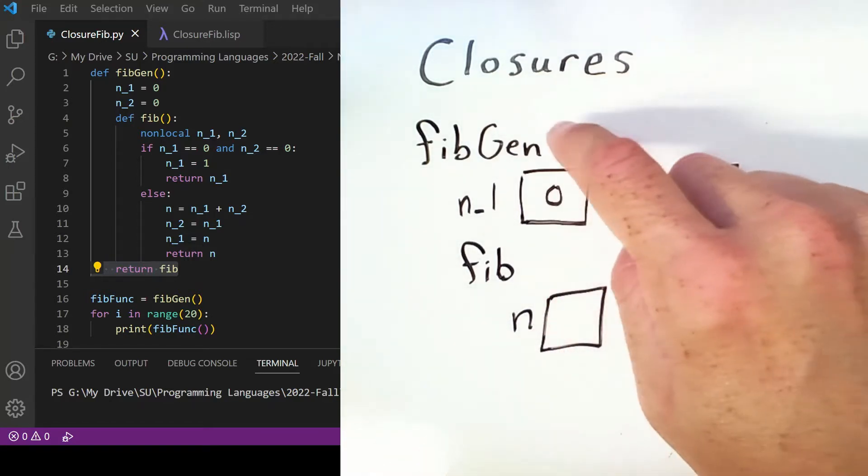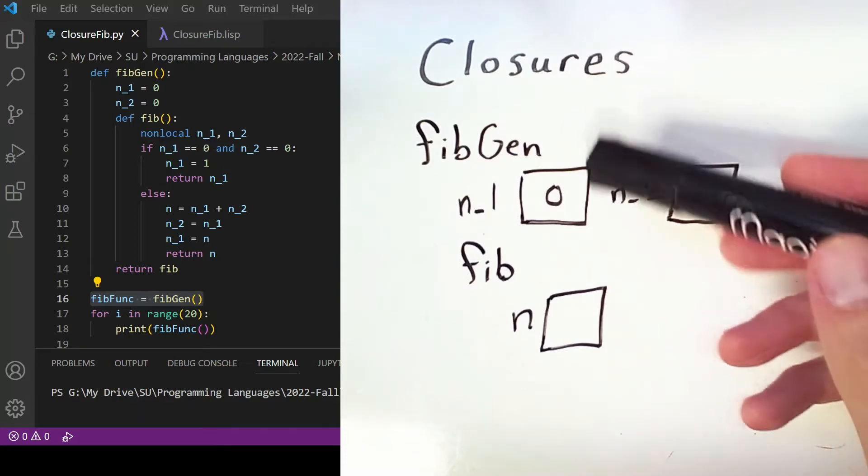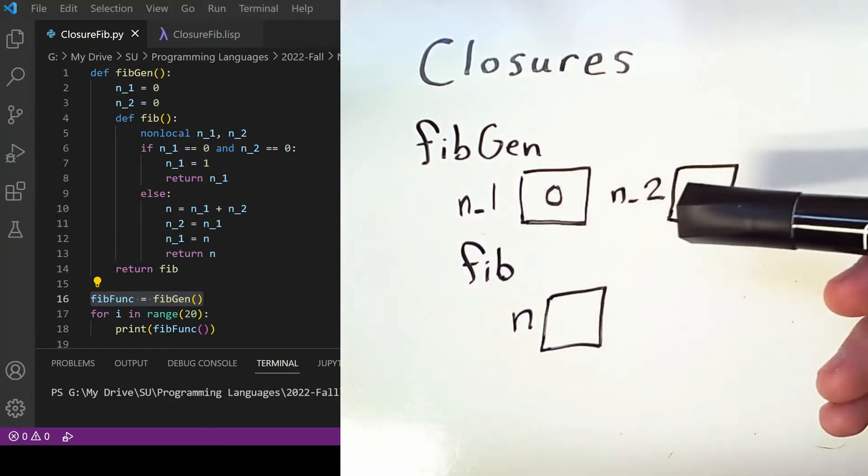This variable fibfunc contains a function, and therefore inside the loop we can call it like a function. Now usually when we call a function like fibgen, all of the activation records and therefore all reference to local variables is eliminated from the stack as these functions return.